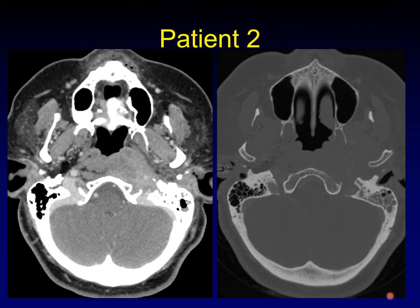Here's patient two. This time on the left side, we have a lot of fullness in the soft tissue right at the skull base, and you can see erosions along the anterior clivus. A breakdown of that nice cortical rim gets ratty and disappears entirely. Again, erosions of the central skull base and a soft tissue mass.